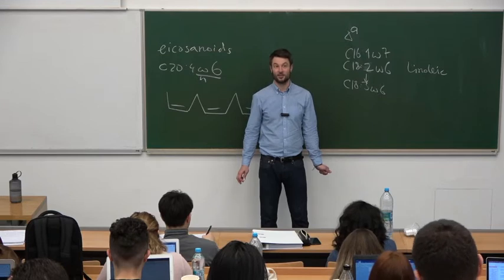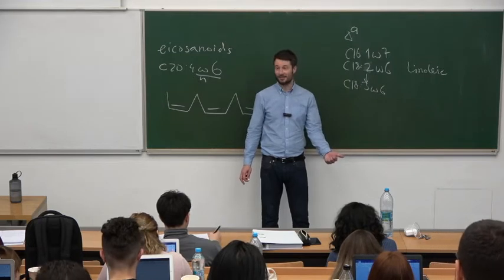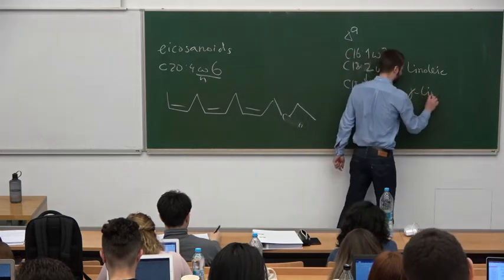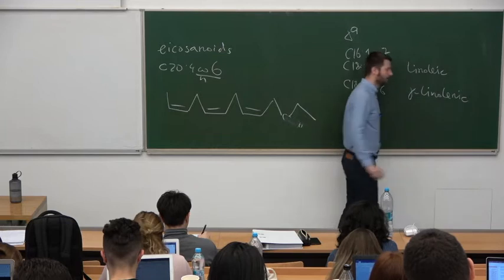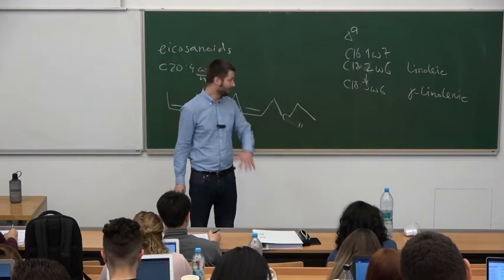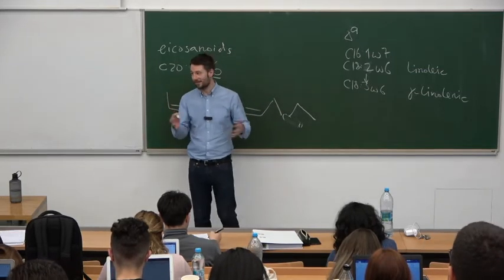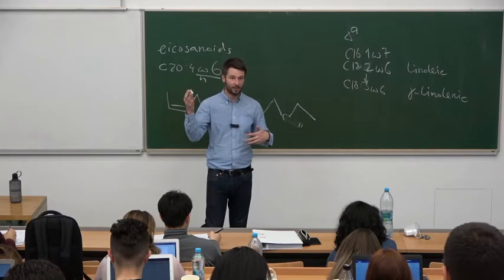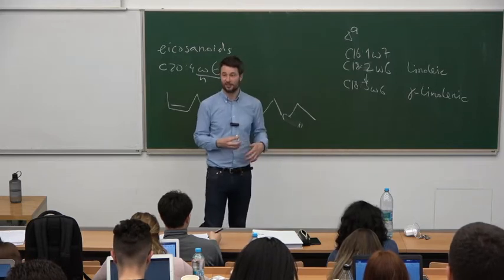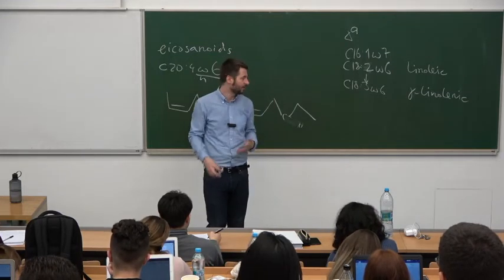Now that we have arachidonic acid, we can finally start making eicosanoids. They can be divided into two major groups depending on the pathway the arachidonic acid takes. The first pathway is called the cyclical or cyclizing pathway, because it creates a cycle — and that pathway creates prostaglandins and thromboxanes. The other pathway is the linear pathway, because it doesn't create any cycle, and that produces leukotrienes and lipoxins.